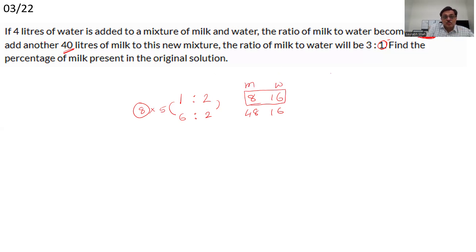But this is not the initial. The initial says to the initial 4 liters of water has been added. Here we have added 4 liters of water. Simply subtract 4 liters of water. So we'll have 8 liters of milk, 12 liters of water. This is your initial. This is our initial mixture. 8 is to 12. Cancel out by 4. We have 2 is to 3. So milk is 2 by 5, 40%. The correct answer to be entered was 40%. That's it.